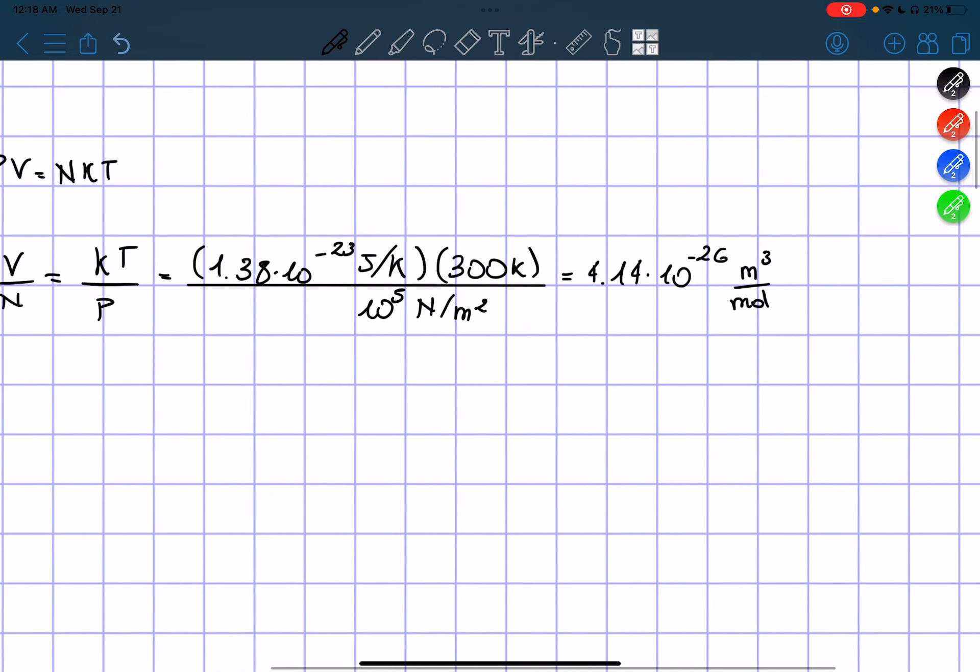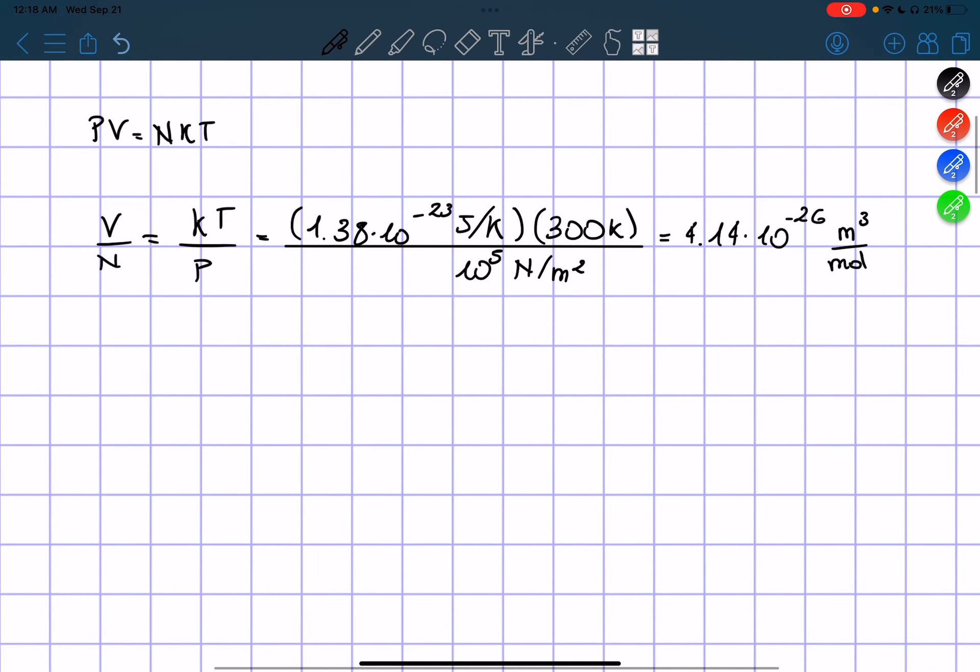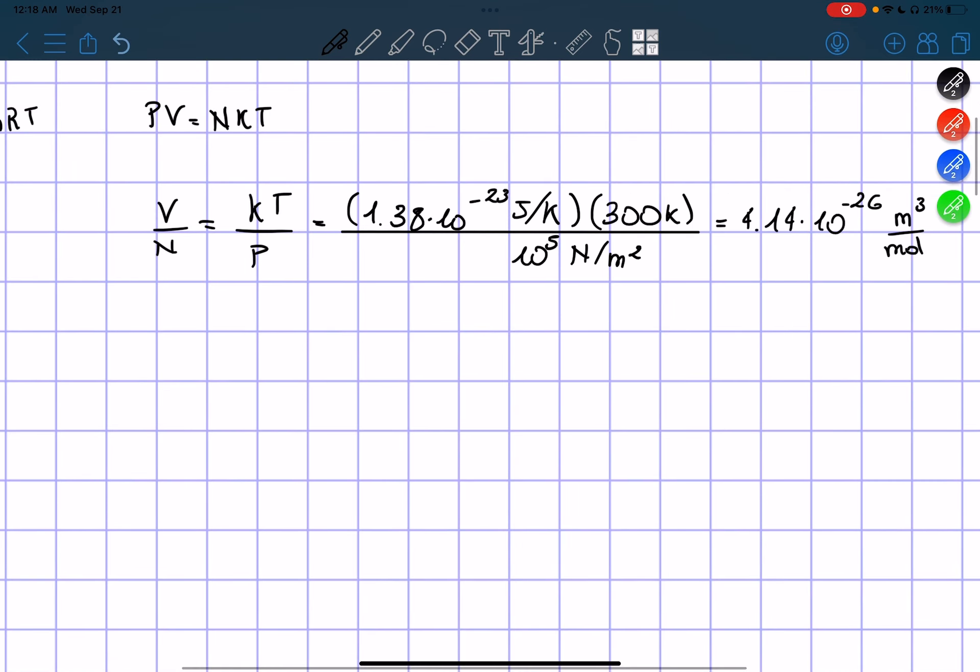So now let's find what is the space that every single molecule occupies. We just have to take the cube root, which equals the power of, we take the results from before, we put it at the power of one third. That is 3.46 times 10 to the power of negative 9 meters per molecule.